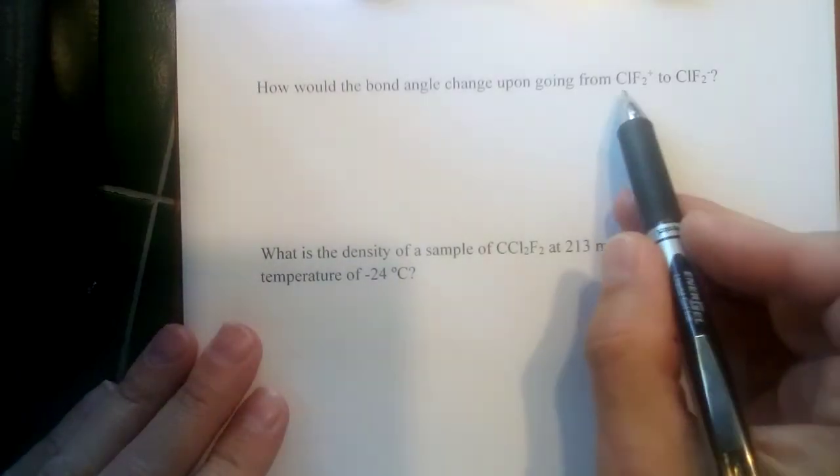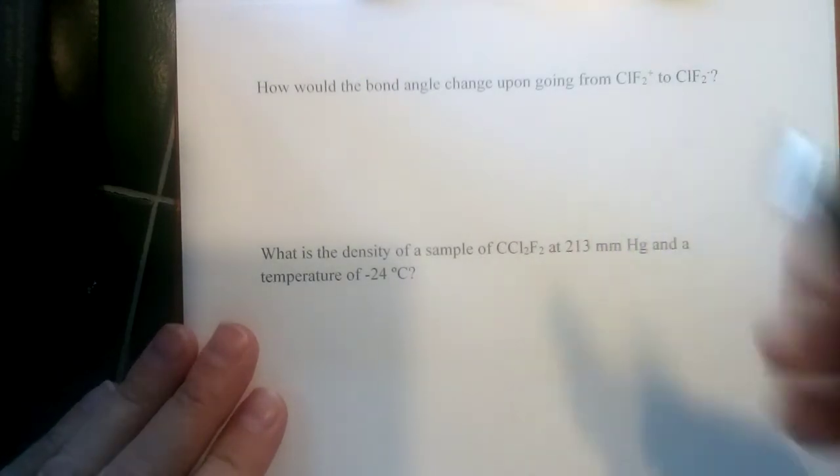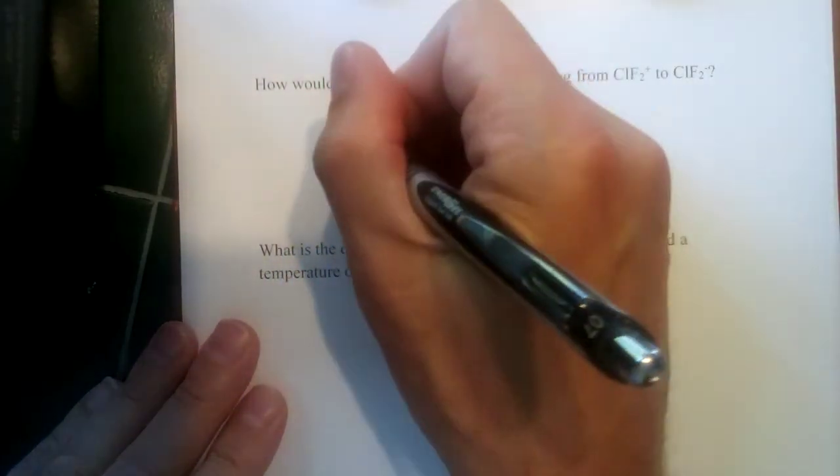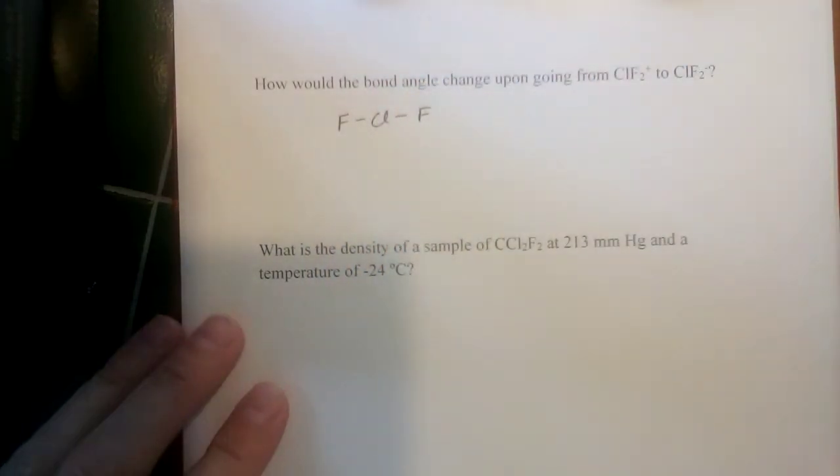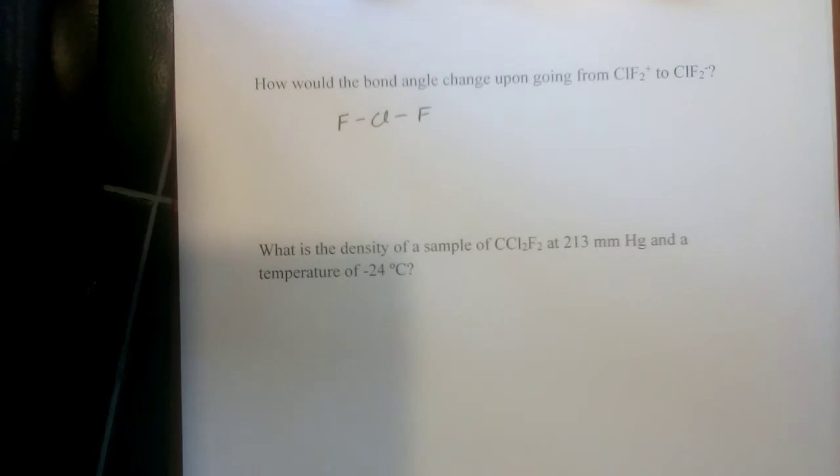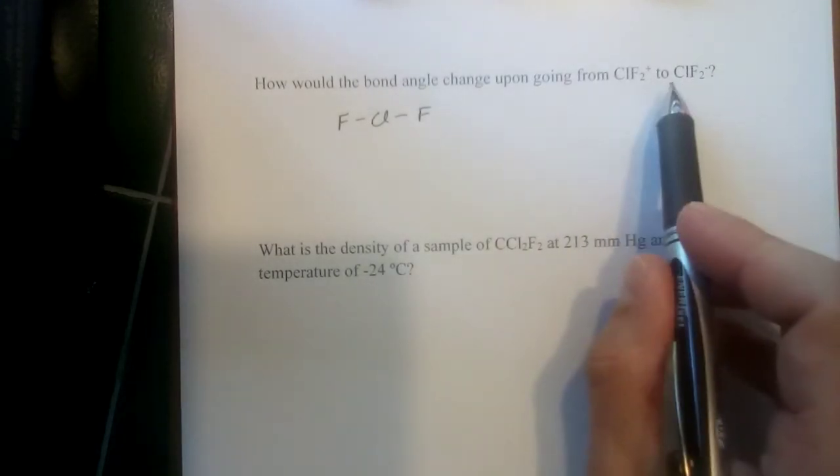So ClF2, Cl of course is less electronegative. It's lower down on the periodic table. So for both of these, we're going to have the same skeleton here. We're going to have chlorine in the middle with fluorines on the periphery. What'll be different is the electrons.